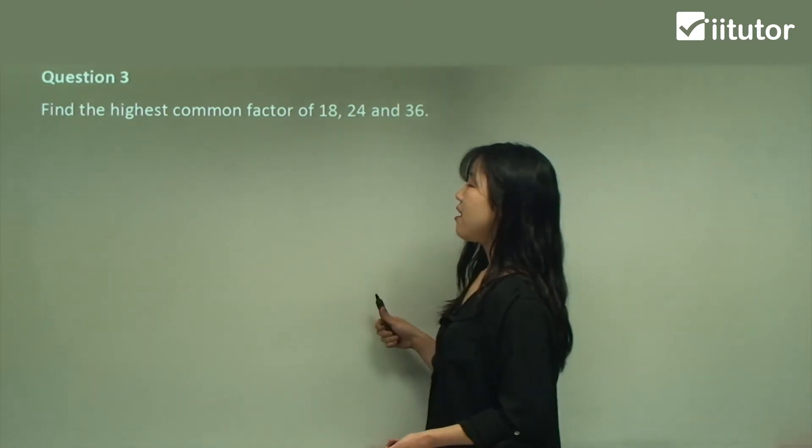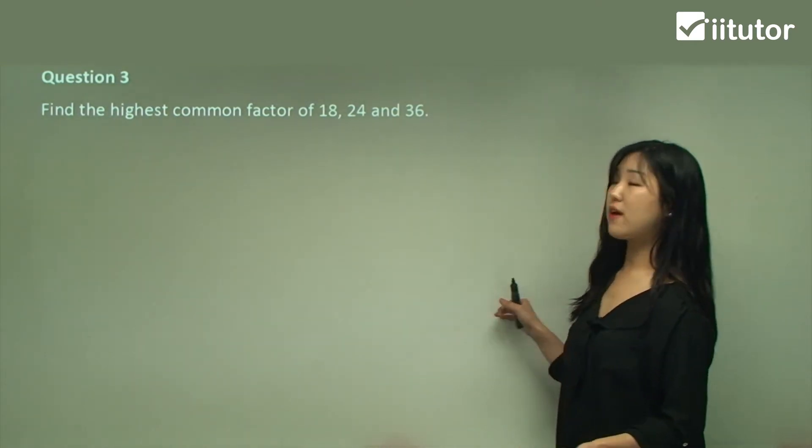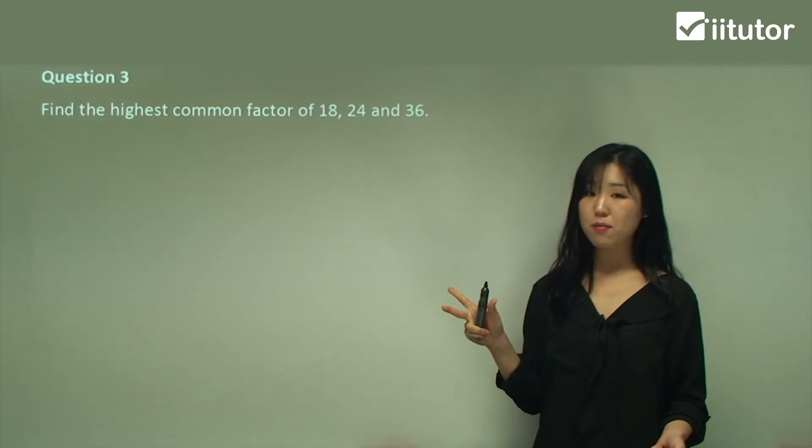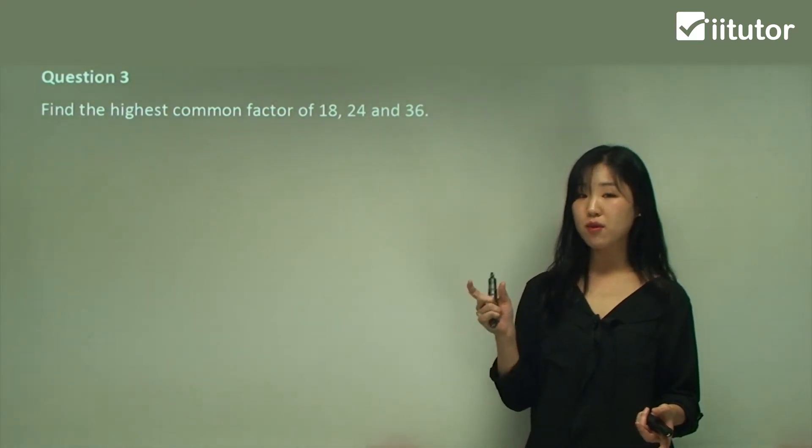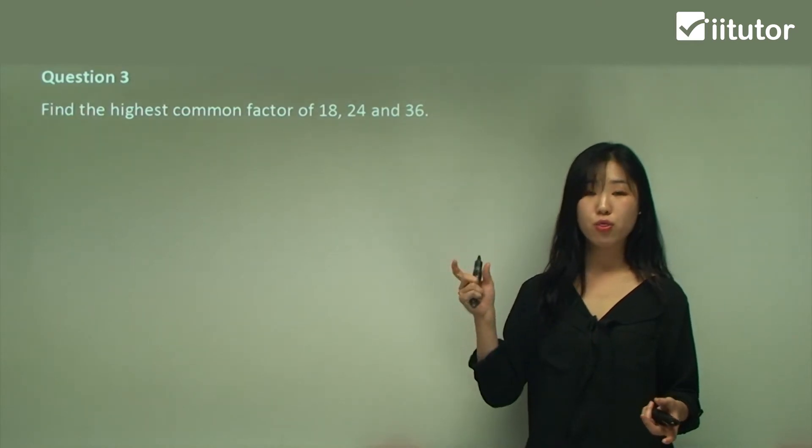Question 3: Find the highest common factor of 18, 24 and 36. So this time there's 3 numbers. But don't worry, do it the exact same method. We're going to find the common factors for all 3 numbers.